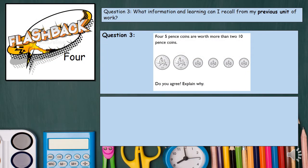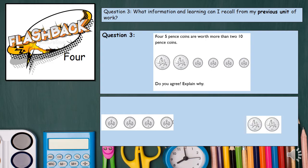Another go at recalling information from our previous unit on money. Four 5 pence coins are worth more than two 10 pence coins — do you agree? We're going to need to use our counting in fives knowledge to find this out. Counting in fives, four 5 pence coins gives us 20 pence. Counting in tens, two 10 pence coins also gives us 20 pence. So do we agree that four 5 pence coins are worth more than two 10 pence coins? No, we don't. The answer is false — the reason being is because they are equal.